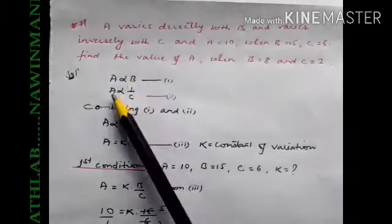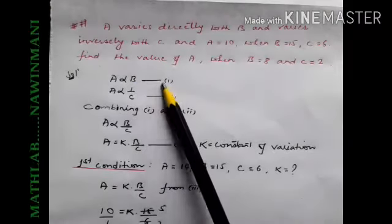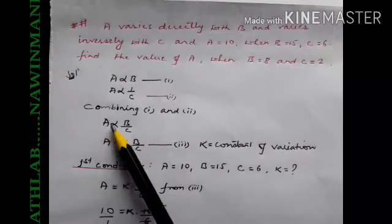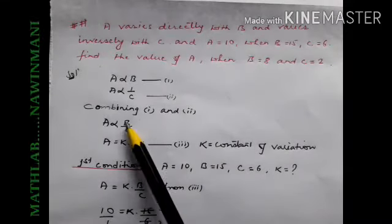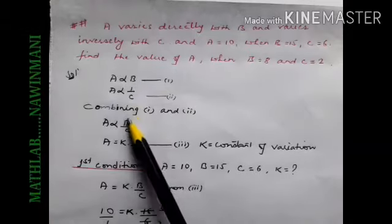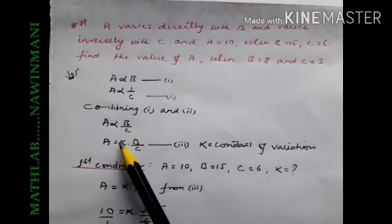A varies inversely with C. If this is condition one and two, if we combine these two we get: A directly varies with B, inversely with C. Variation into equal to constant K. We have done it before.